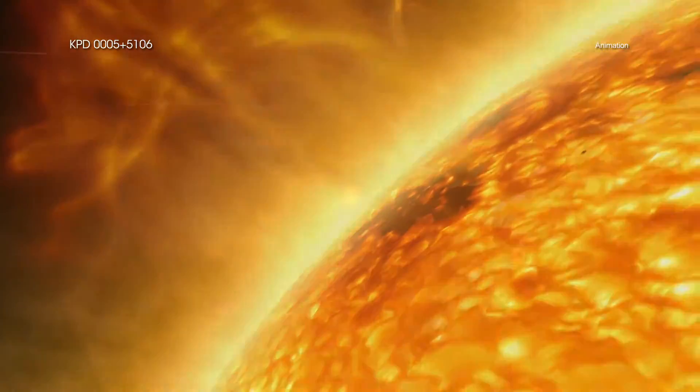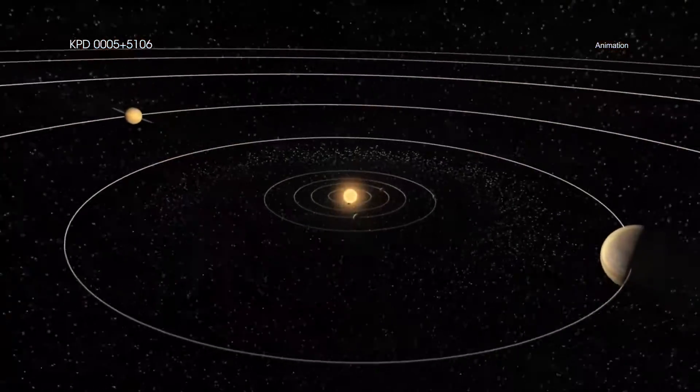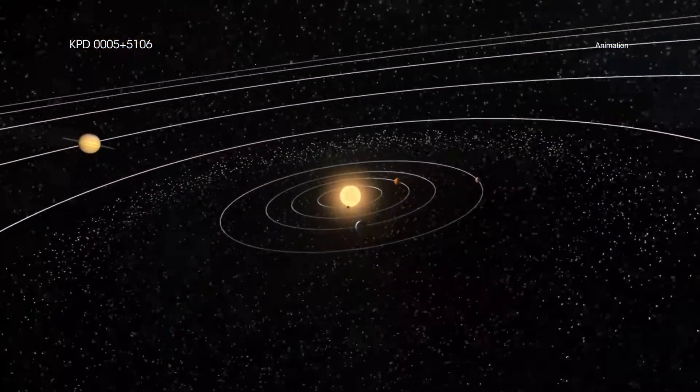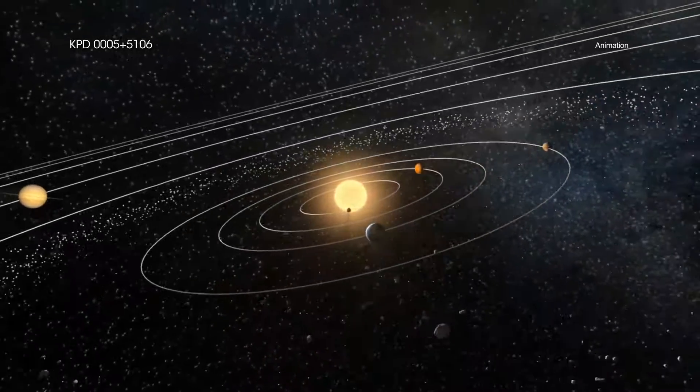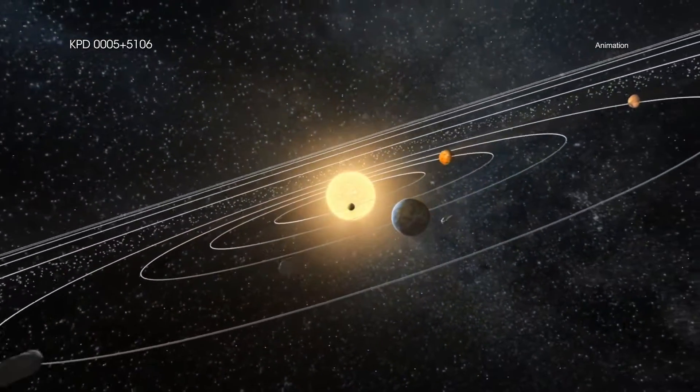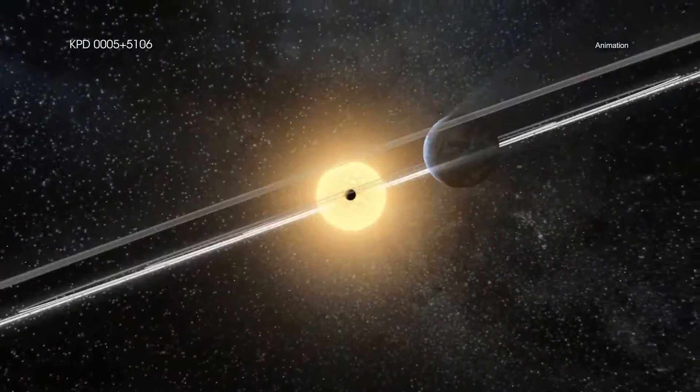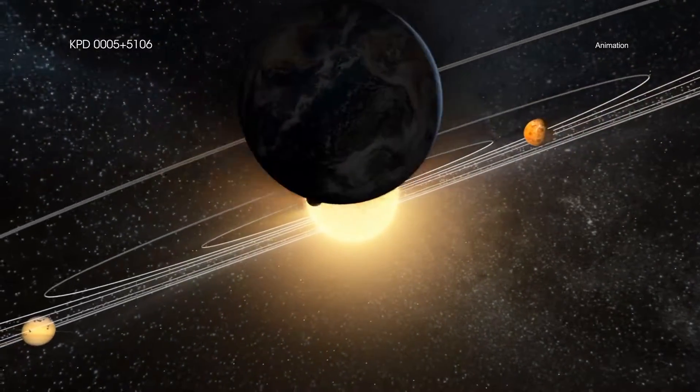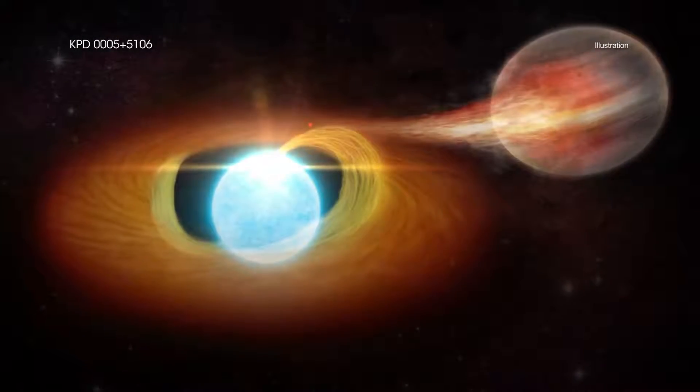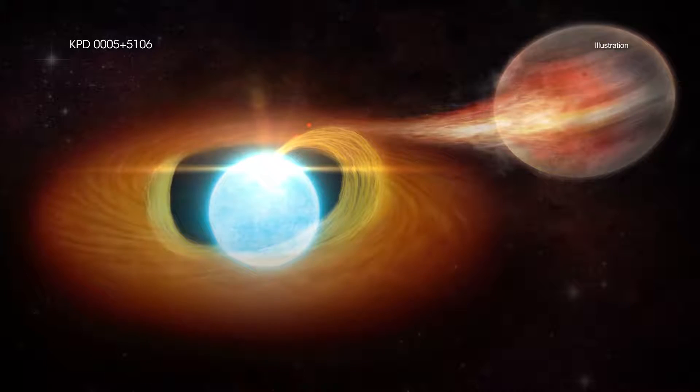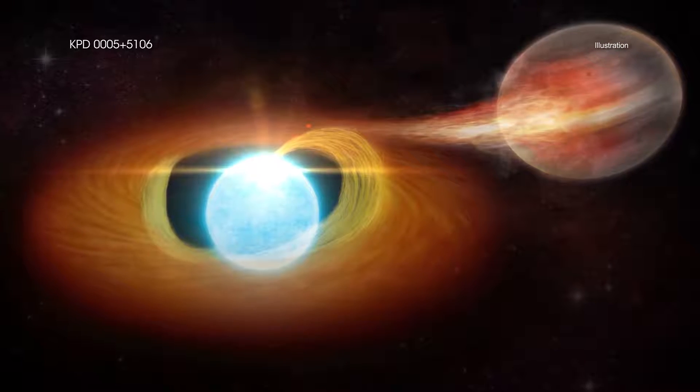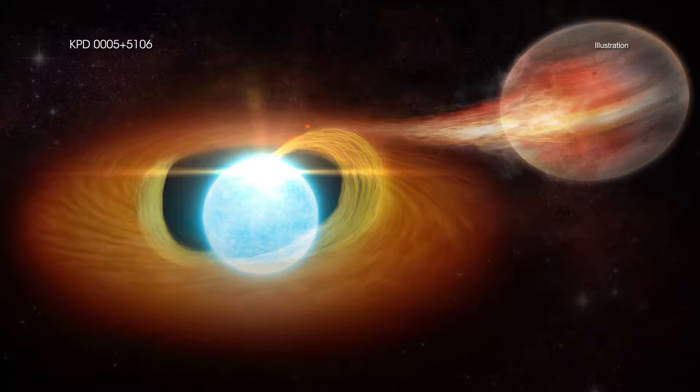Not only is the white dwarf much hotter than our Sun, this companion object is much closer than Earth is to our star. In fact, this companion object is about 30 times closer to the Sun than Mercury. At a distance of just 500,000 miles away from the white dwarf, this companion would be getting blasted by heat and radiation at point-blank range.